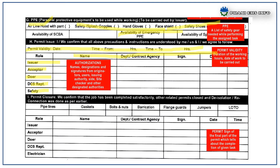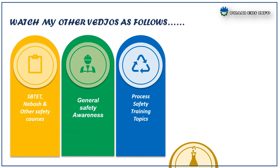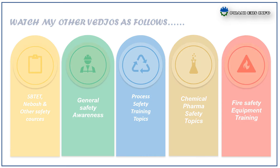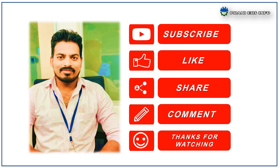The last section is permit sign-off — the final part of the permit which confirms the completion of the given task. That covers the line breaking work permit. Please don't forget to subscribe and share my videos to get more content. Thanks for watching — have a safe day.